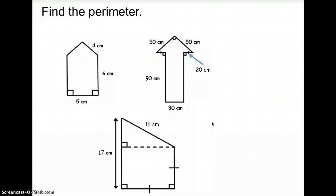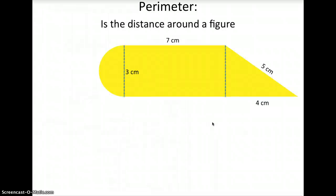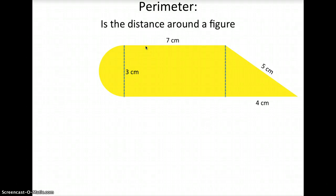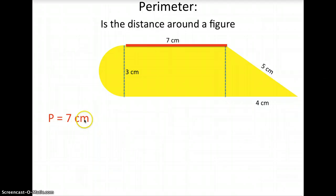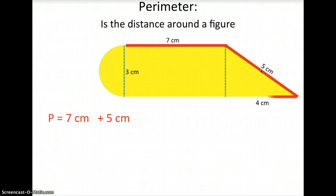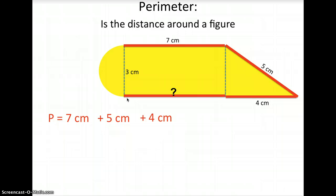Now let's make it more difficult. What if you have a semicircle at the end? Let's put the numbers we know first. Taking the distance around the figure and getting the perimeter, we start on top — 7 centimeters, so perimeter equals 7 centimeters. Then we take this diagonal line and that's 5 centimeters, so we add 5. Then that side is 4 centimeters, so we add 4. Then this side is another 7 centimeters because it's the same as the distance on top.